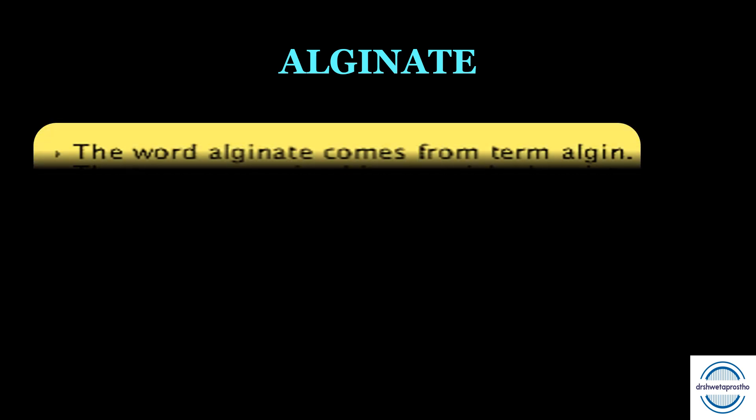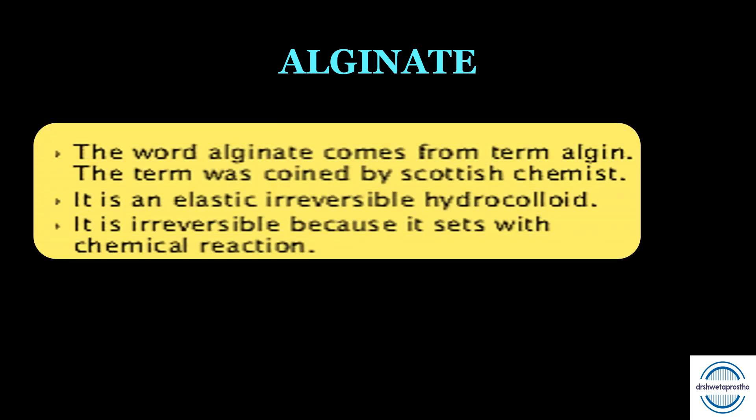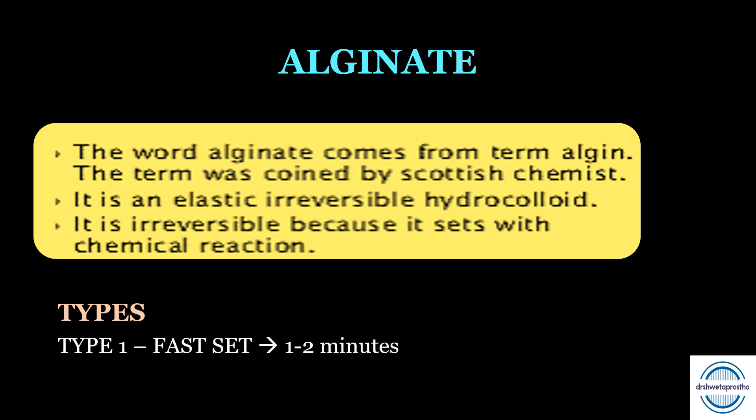Alginate — the word comes from the term algin or alginic acid. It is the mucus extract of brown seaweed, basically n-hydro beta-D-mannuronic acid. This term was coined by a Scottish chemist. It is an elastic irreversible hydrocolloid — irreversible because it sets by chemical reaction. There are two types depending on setting time: Type 1, fast-setting alginate with a setting time of 1 to 2 minutes, and Type 2, slow-setting with a setting time of 2 to 4 minutes.